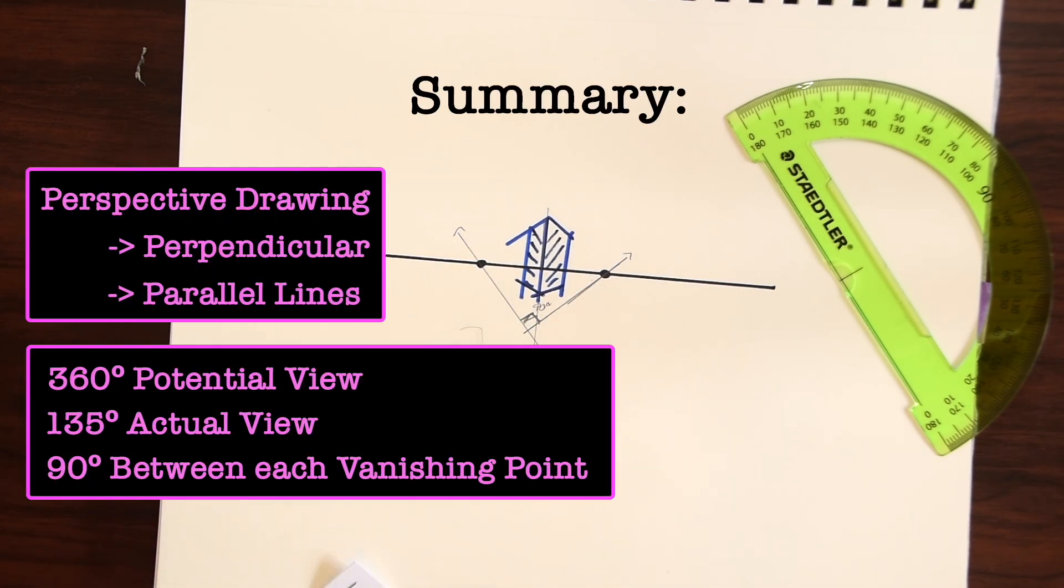So just to summarize what we went over we went over what perspective drawing is and how it involves perpendicular and parallel lines. We saw the field of view and how we as humans have the potential to have 360 degree view. But meanwhile we only have 135 degree view at any one time.